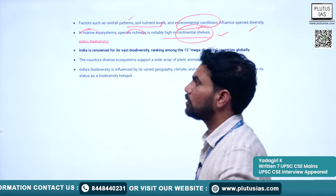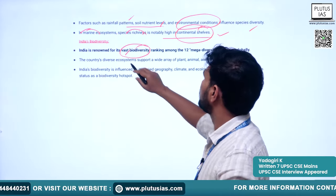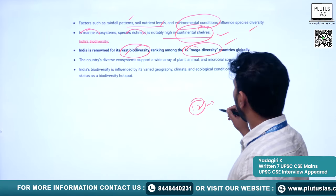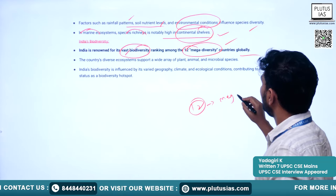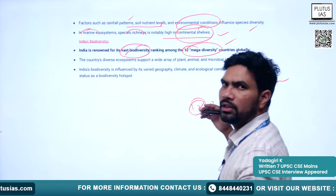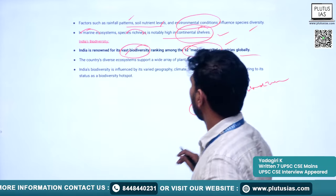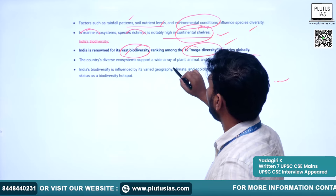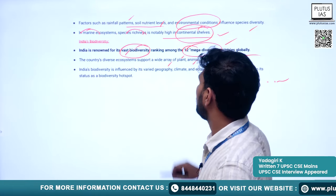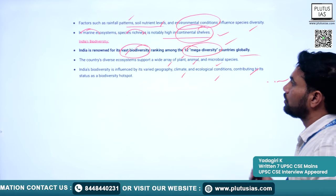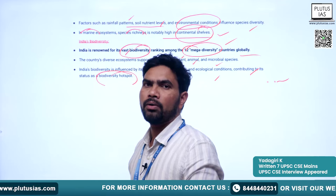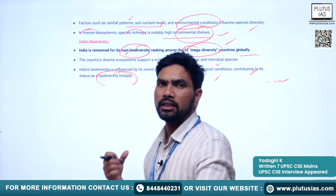India is renowned for its vast biodiversity, ranking among the 12 mega biodiversity countries globally. India is one of these 12 mega biodiversity hotspots. The country's diverse ecosystems support a wide variety of plants, animals, and microbial species, influenced by varied geography, climate, and ecological conditions.